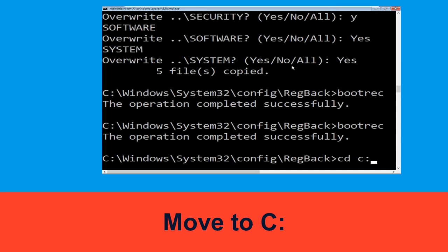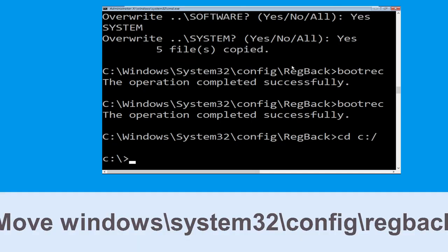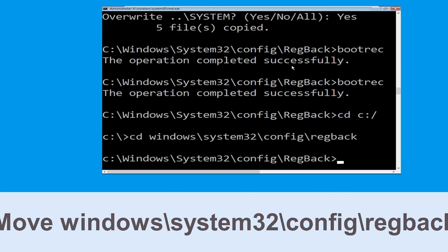Now type: cd C:\ and execute. Then type: cd windows\system32\config\regback and hit Enter to execute this command.